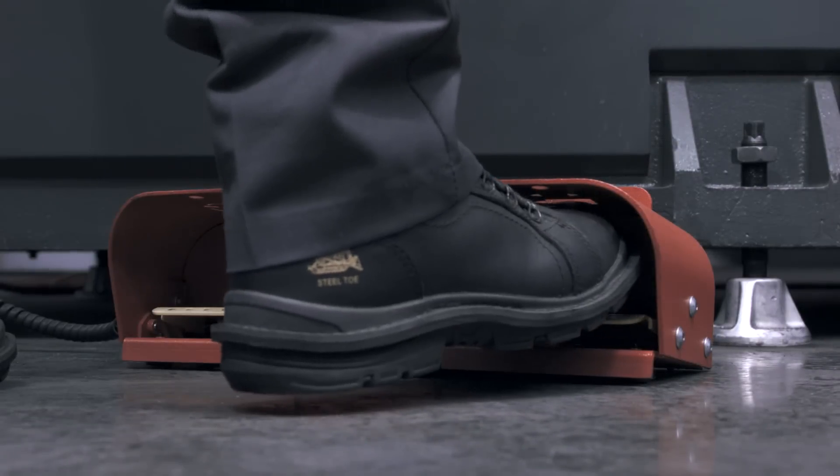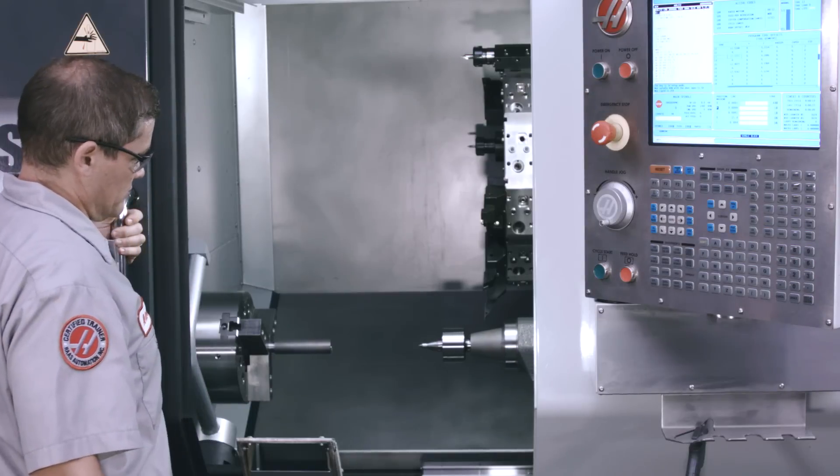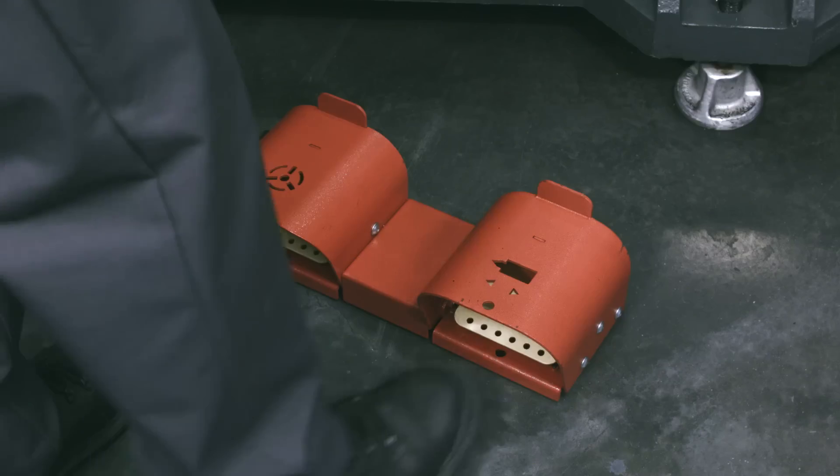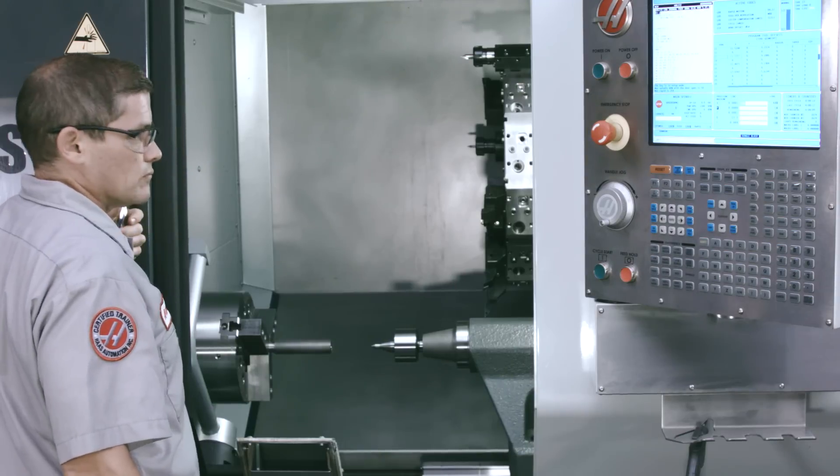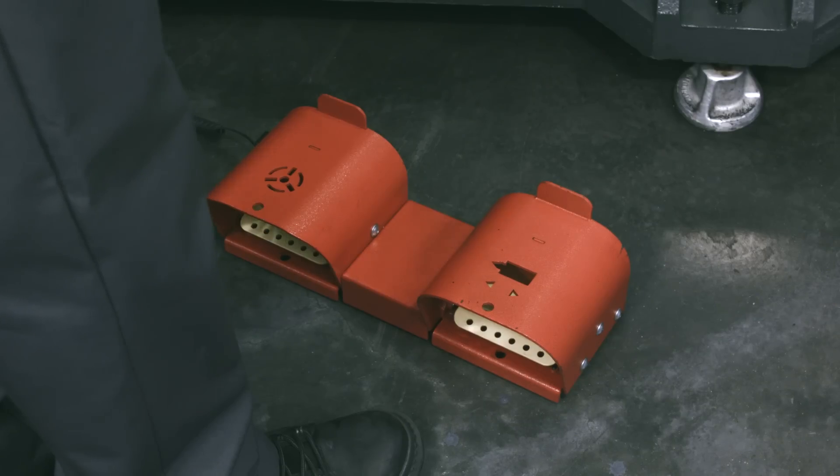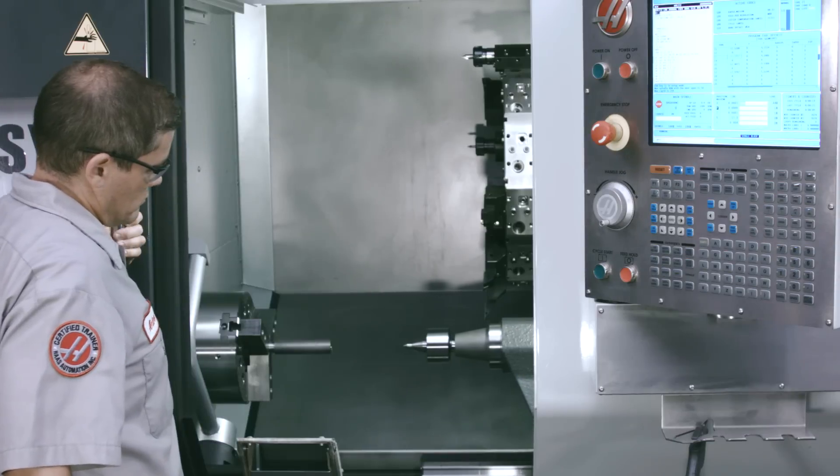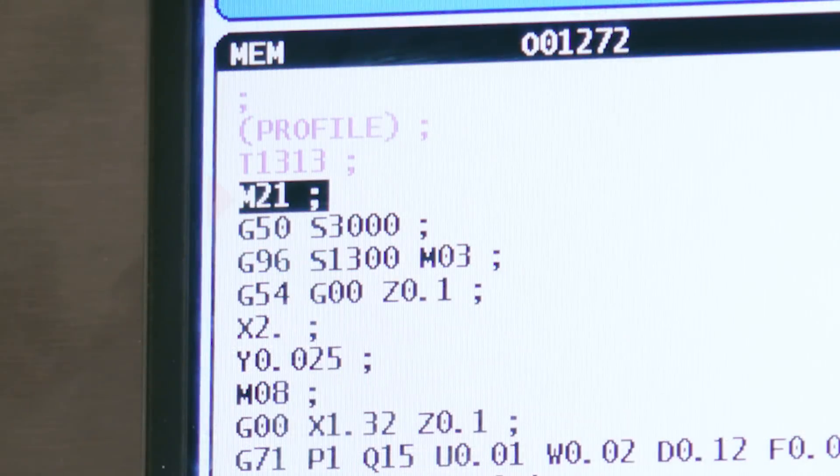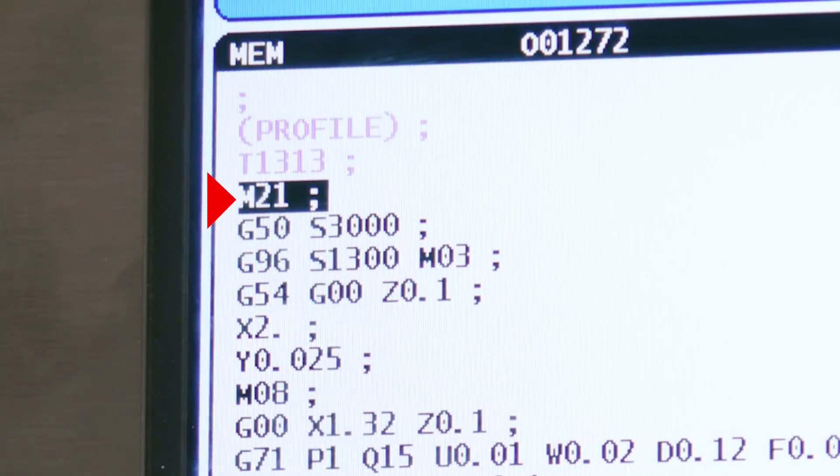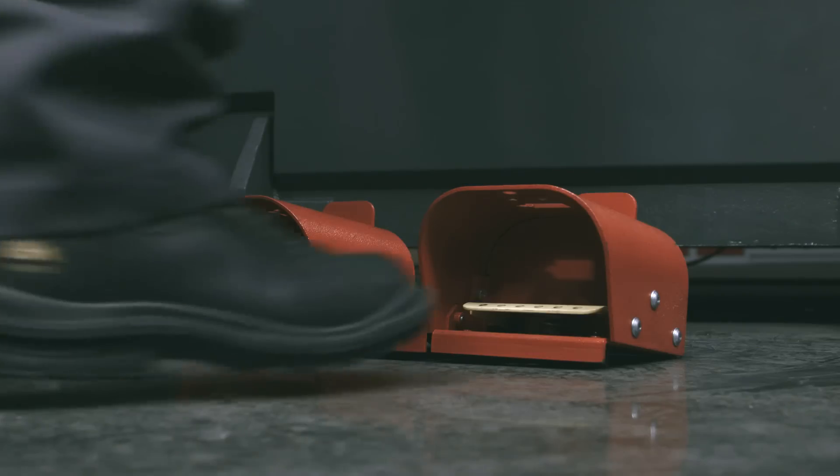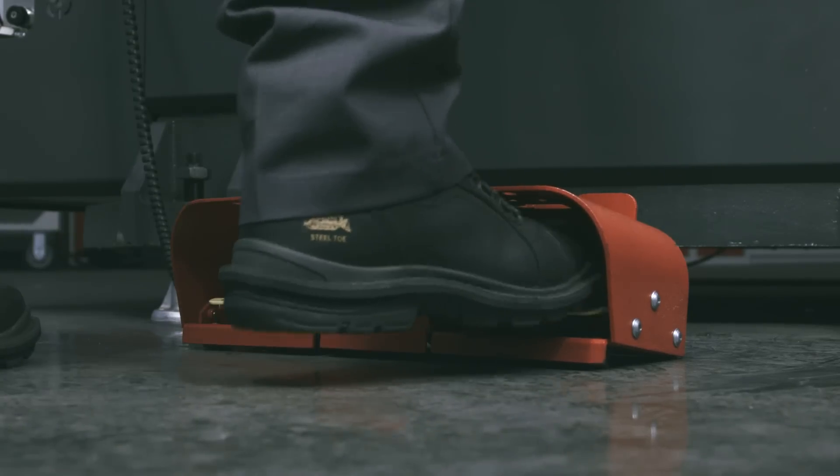When the foot pedal is used to put the tailstock in motion, either forward or in reverse, when you press the pedal a second time, the tailstock will stop as a safety precaution. Once it's stopped, pressing the pedal again will return it to the retracted position. However, it's important to note, when an M21 or M22 command has been issued, pressing the foot pedal will not halt tailstock motion.